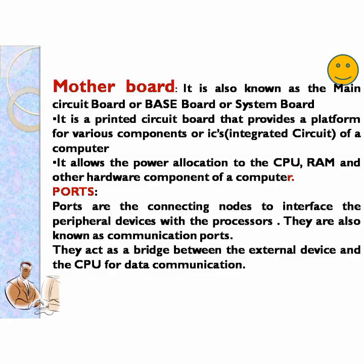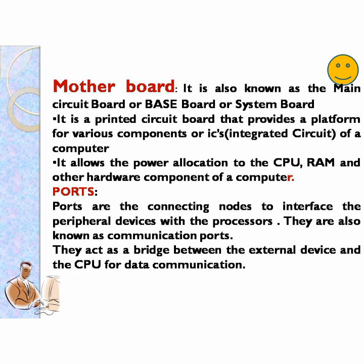The next hardware part is the motherboard. It is also known as the main circuit board, base board, or system board. It is a printed circuit board that provides a platform for various components or ICs — that is, integrated circuits — of a computer. It allows power allocation to the CPU, RAM, and other hardware components of a computer.